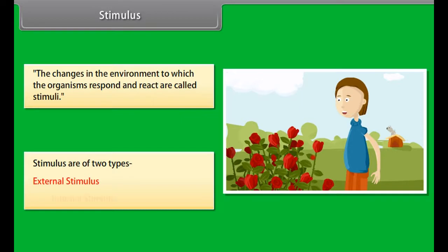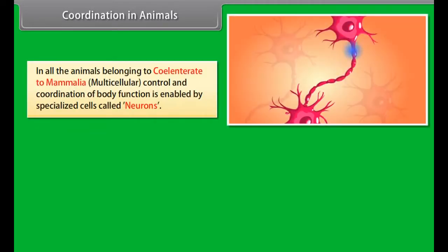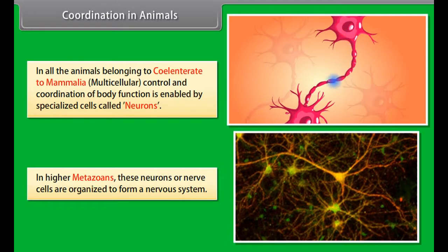Stimuli are of two types: external stimulus and internal stimulus. External stimulus is due to environmental factors like heat, light, sound, water, wind, etc. Internal stimulus occurs within the organism and may be due to hormones, acids, enzymes, etc. present within the organism.